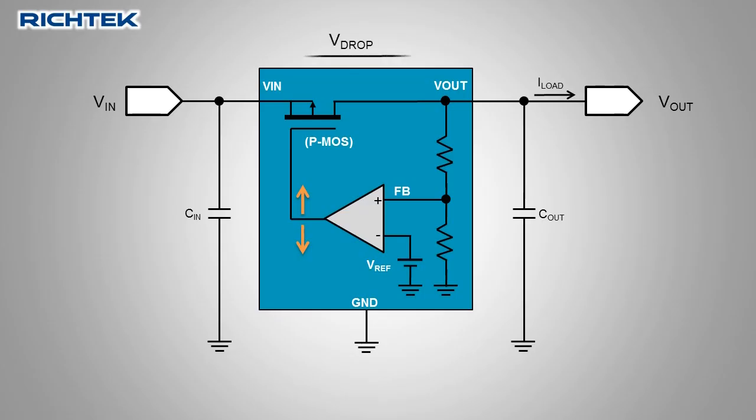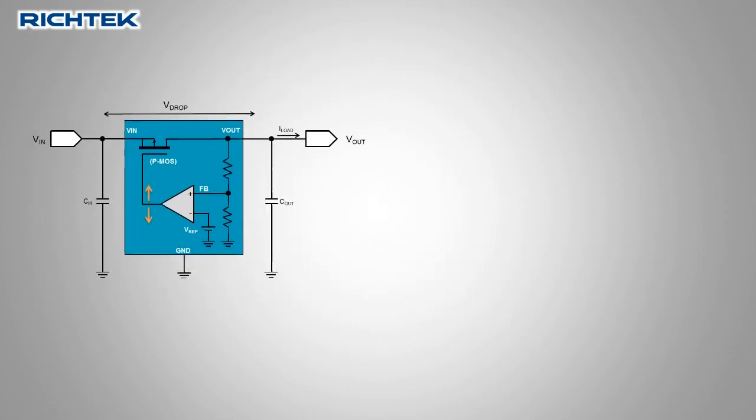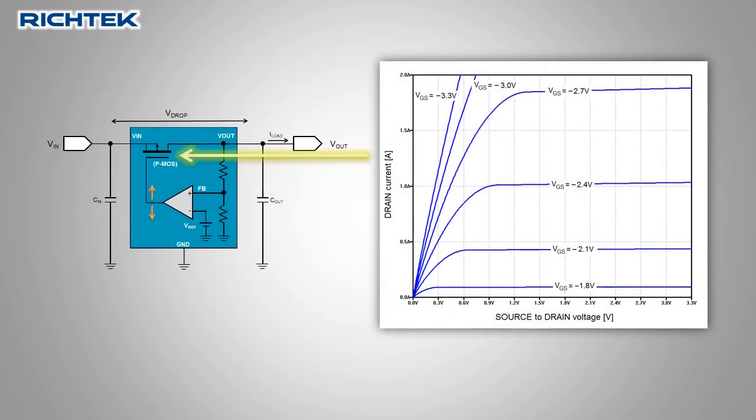The LDO needs a certain amount of input to output voltage difference for regulation. When the difference between the input and output voltage becomes smaller, the MOSFET operation shifts towards the MOSFET ohmic region towards the left in the MOSFET IV curves.